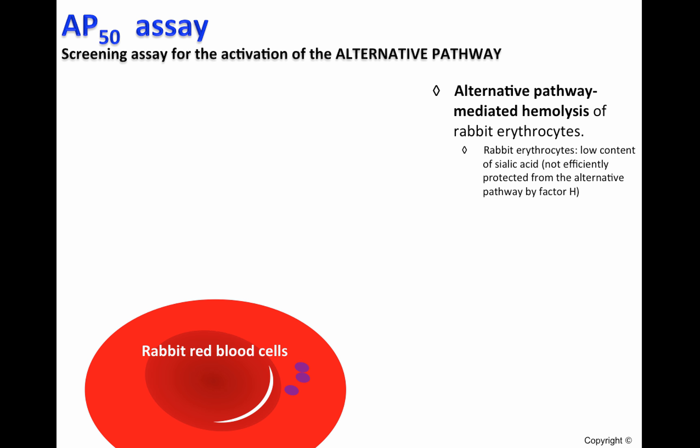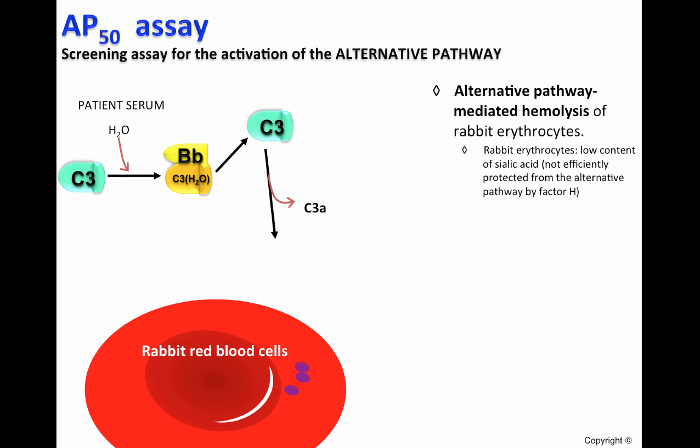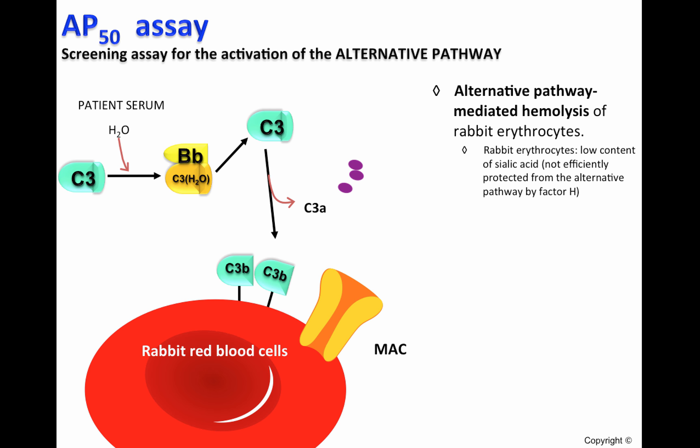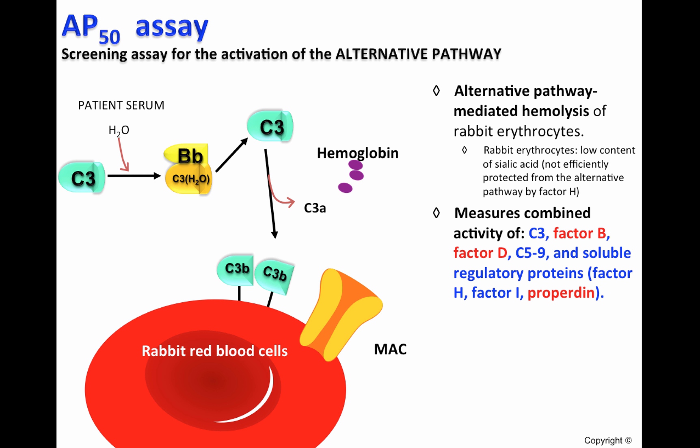When rabbit erythrocytes are incubated with test or patient serum, the alternative pathway of complement is activated, which means that C3b will be deposited on the cell surface of red blood cells and, later on, the membrane attack complex will be formed, resulting in hemolysis. Hemolysis of red blood cells is measured by determining the release of hemoglobin into the supernatant. If a complement component is absent, such as factor B and D, which are specific to the alternative pathway, and other complement components including certain regulatory proteins, the AP50 level will be zero.